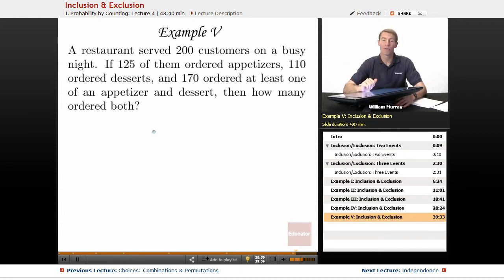And the question is, how many ordered both appetizers and desserts? So, quickly, I need to set up some events here. My colon equals, remember, means defined to be. I'm just going to say A is the set of all people who ordered an appetizer. B is the set of all the people that ordered dessert.